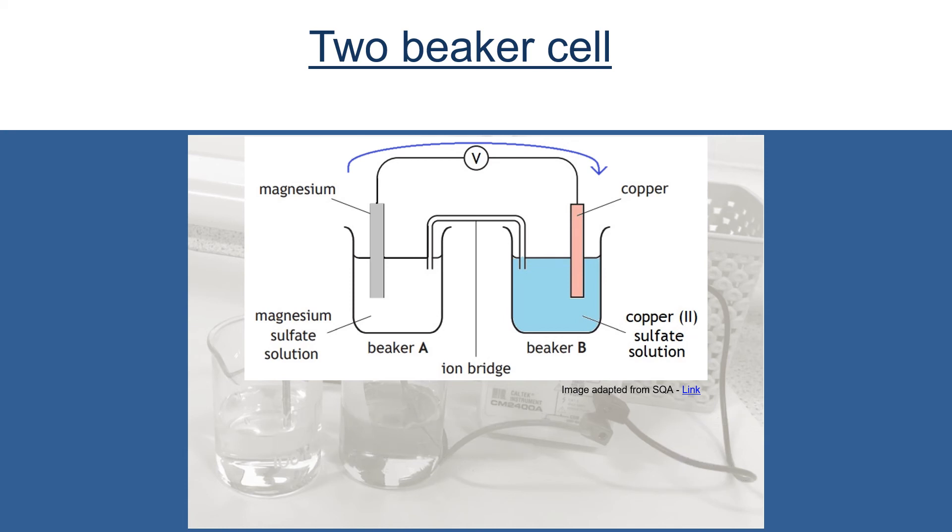Now finally what we want to do is combine these to produce our redox equation. That's our reduction and oxidation together. We have to first make sure that our number of electrons being lost are the same as the number being gained, and in this case they are. Magnesium donates two electrons and copper accepts them. So we can combine this to give our redox equation which is Mg solid plus Cu2+ (aq) becomes Mg2+ (aq) plus Cu solid.